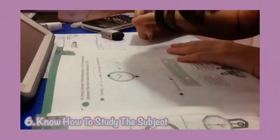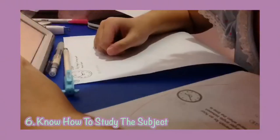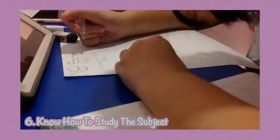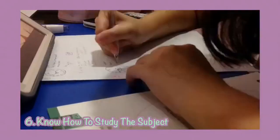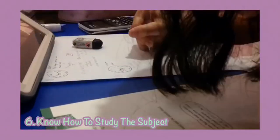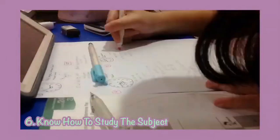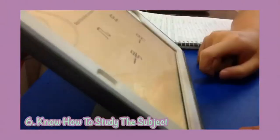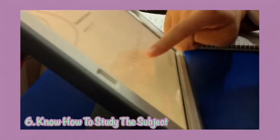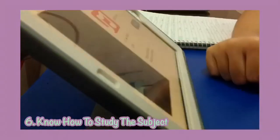My sixth tip for you guys is to know how to study the subject. Different subjects require different methods to study. For example, math is all about getting a lot of worksheets and using those worksheets to practice until you get everything right. In a way, you just have to understand the concept and use practice worksheets. Biology is all about memorization,